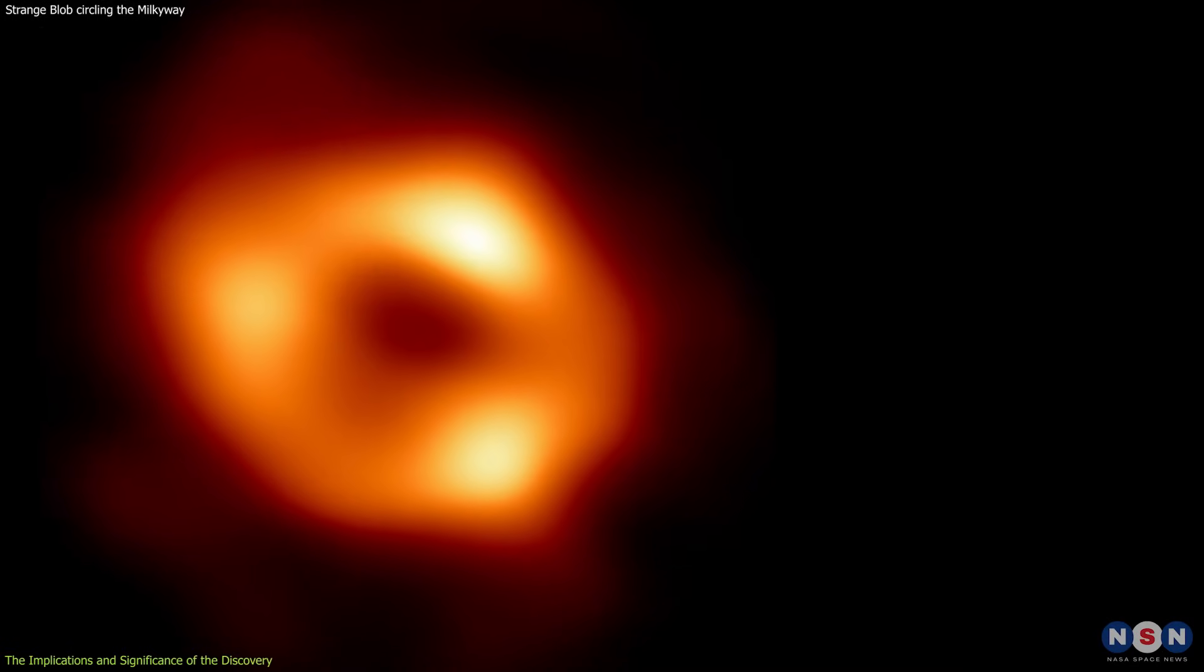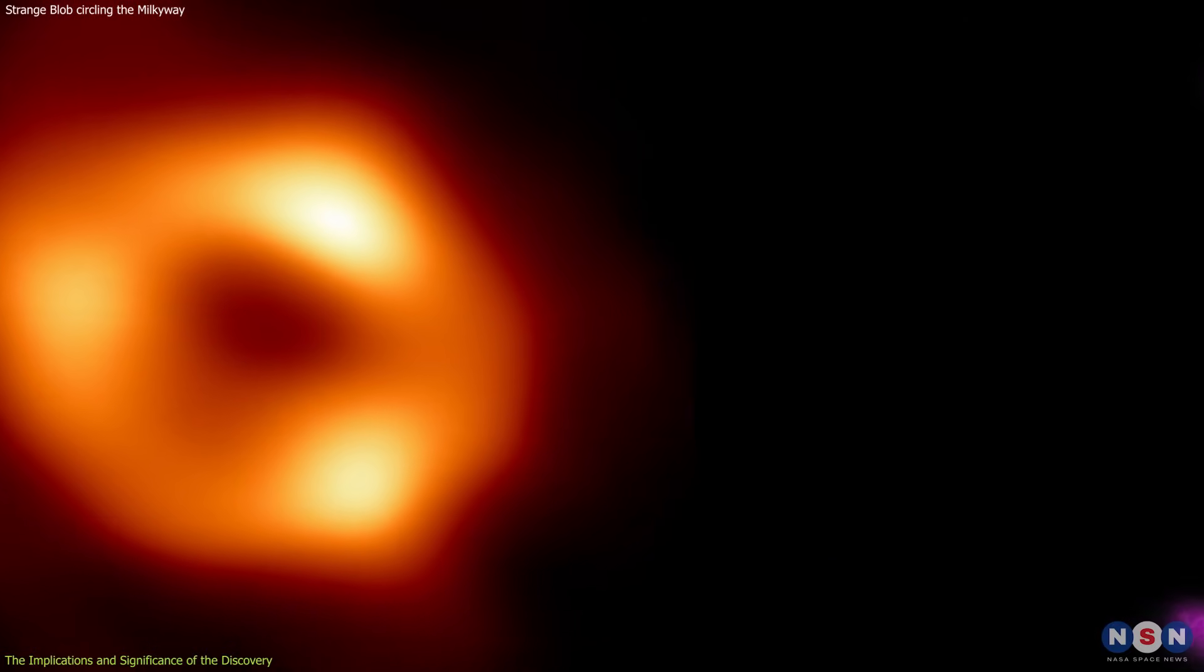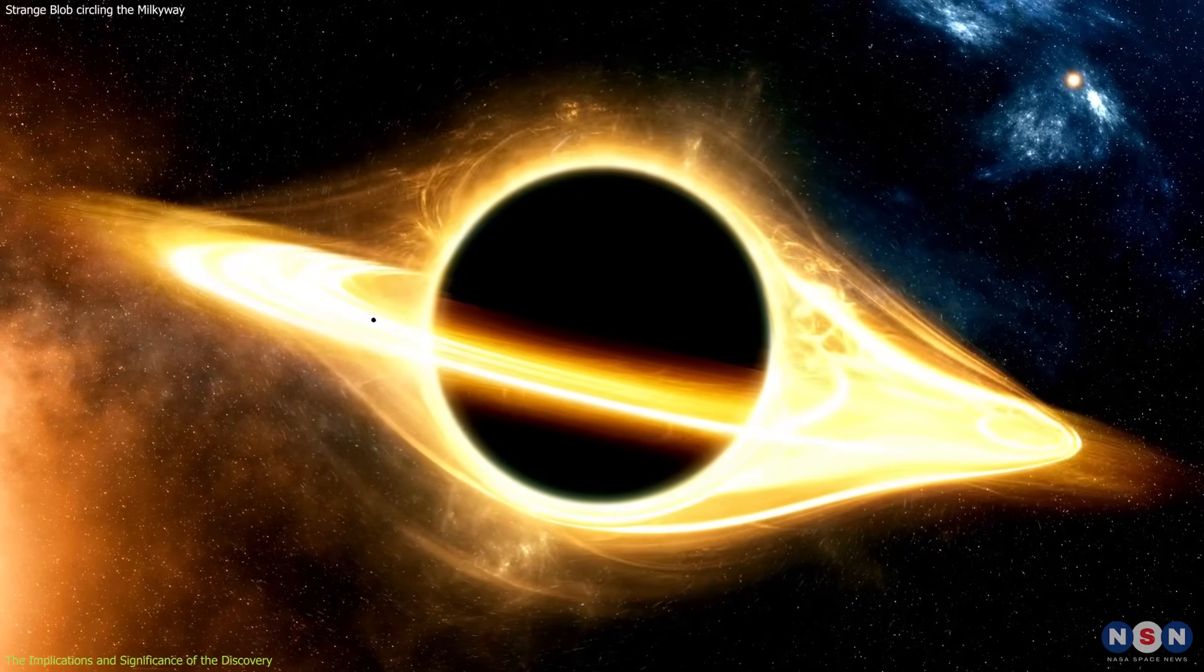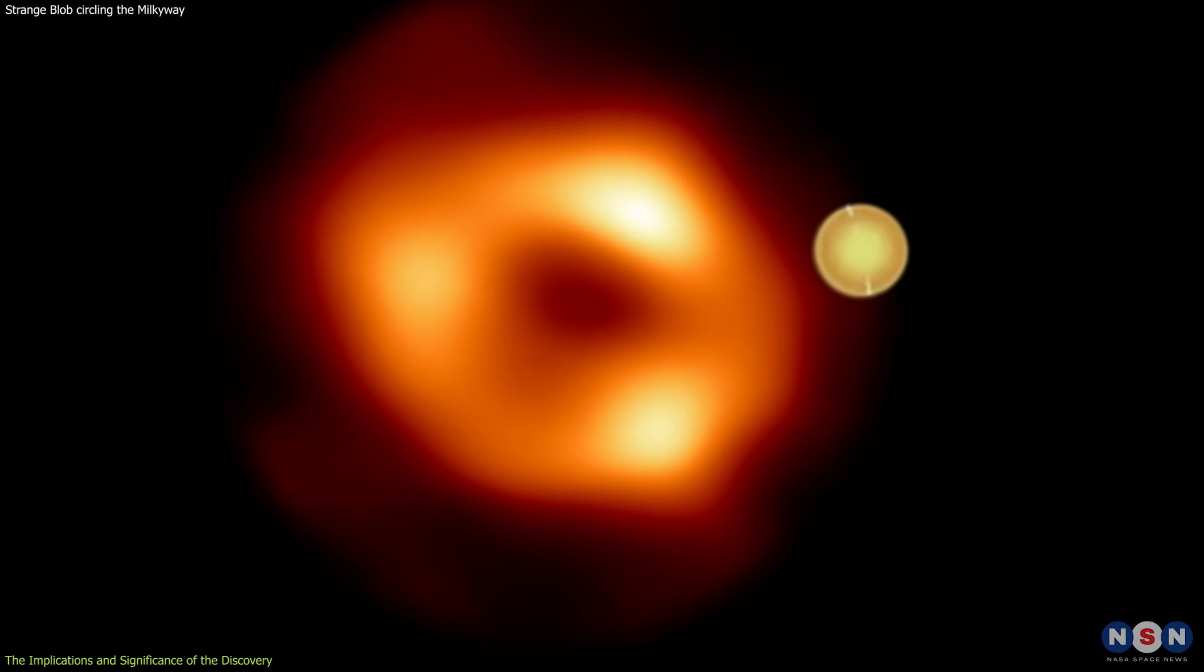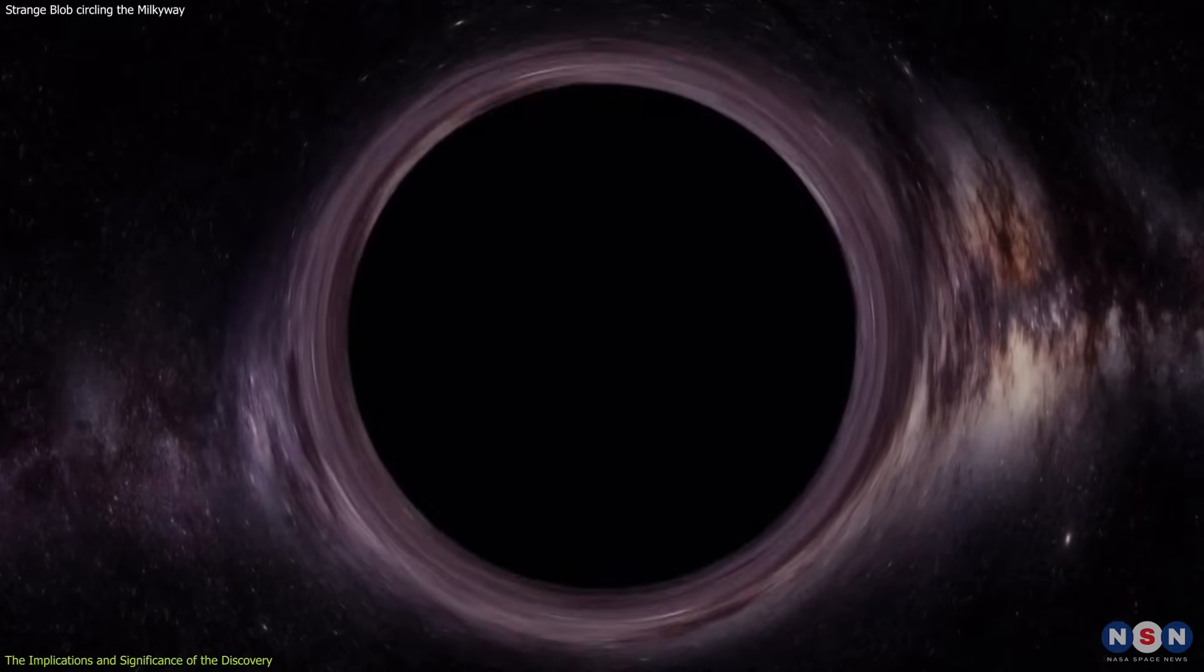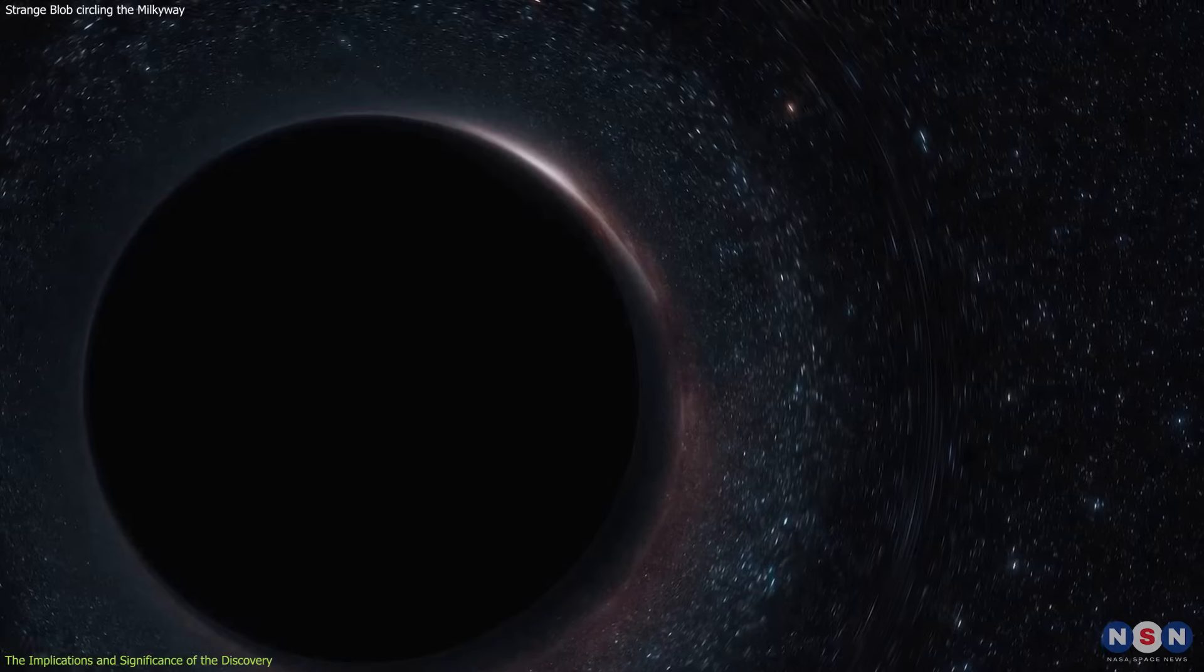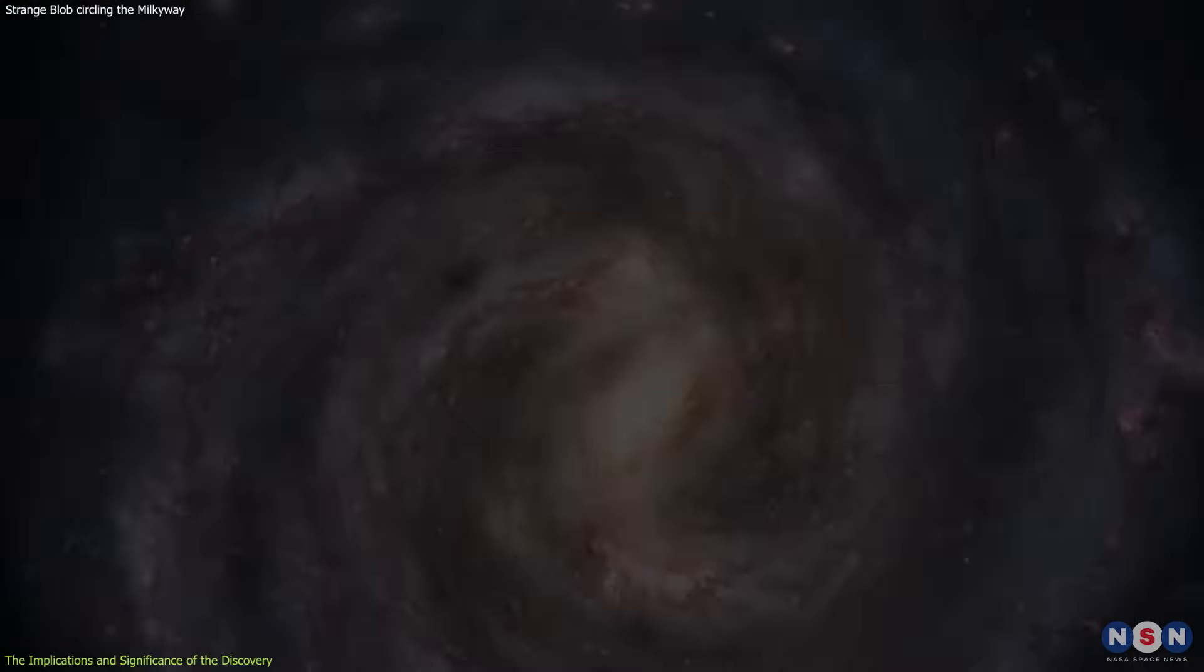Third, it challenges our assumptions and expectations about the nature and origin of the gamma ray radiation from the black hole. It shows that the gamma rays are not coming from the accretion disk itself, but from a blob of gas that is orbiting the black hole at a very high speed and a very close distance. This suggests that there might be other phenomena or features that are hiding in the vicinity of the black hole, and that they might reveal more information about the physics and history of the black hole in the galaxy.